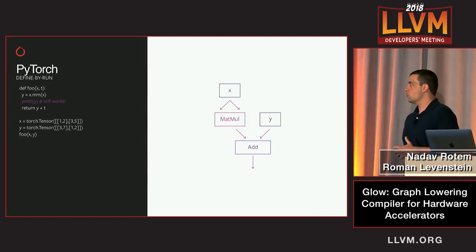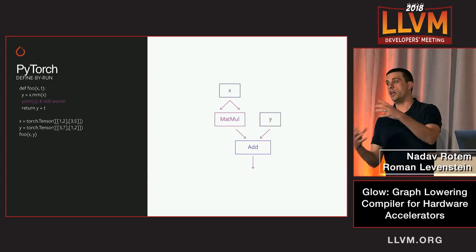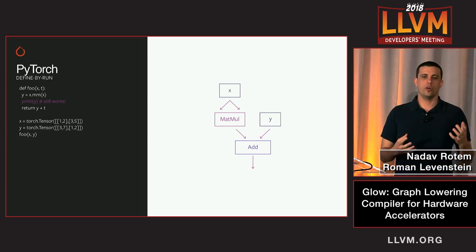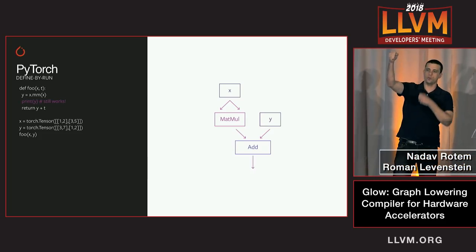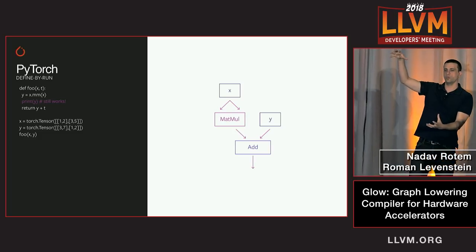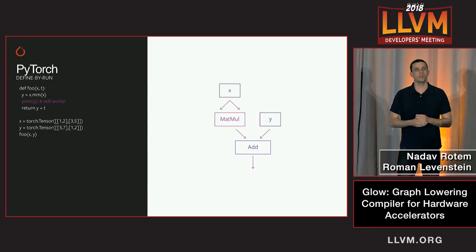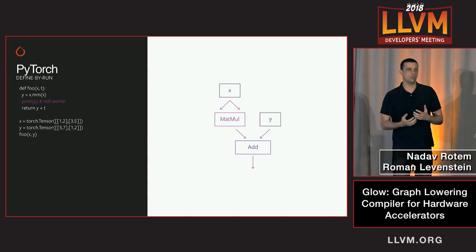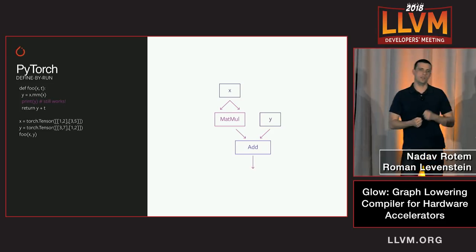PyTorch gives researchers a familiar Python-based environment where they can create the neural network graph. They can build it in one of two ways: first, they can use something similar to the LLVM IR builder — create node, create node, create node — to build the graph. Alternatively, they can use define-by-run: they write code similar to NumPy, and PyTorch creates the neural network graph automatically. Later they can take that graph, serialize it, execute it, and optimize it.